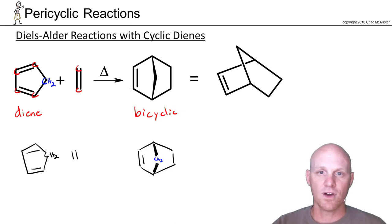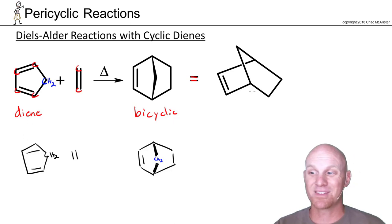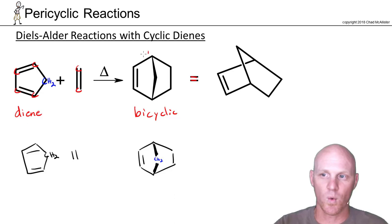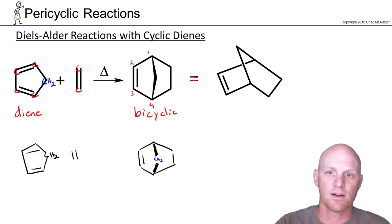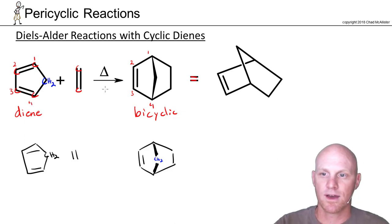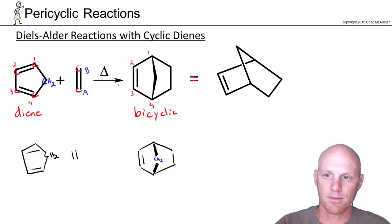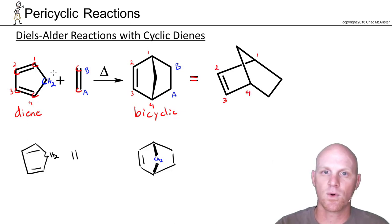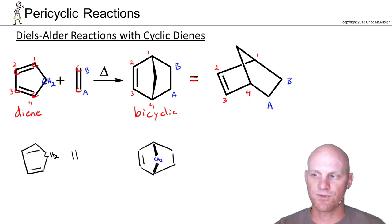One other thing to note: another way we draw this bicyclic compound. I often number my compounds with 1, 2, 3, 4 from my diene, and then A and B on my dienophile. That numbering system works in the product as well: 1, 2, 3, 4, A, and B. You can see the new bonds between 4 and A, and 1 and B — that's where the new sigma bonds formed.